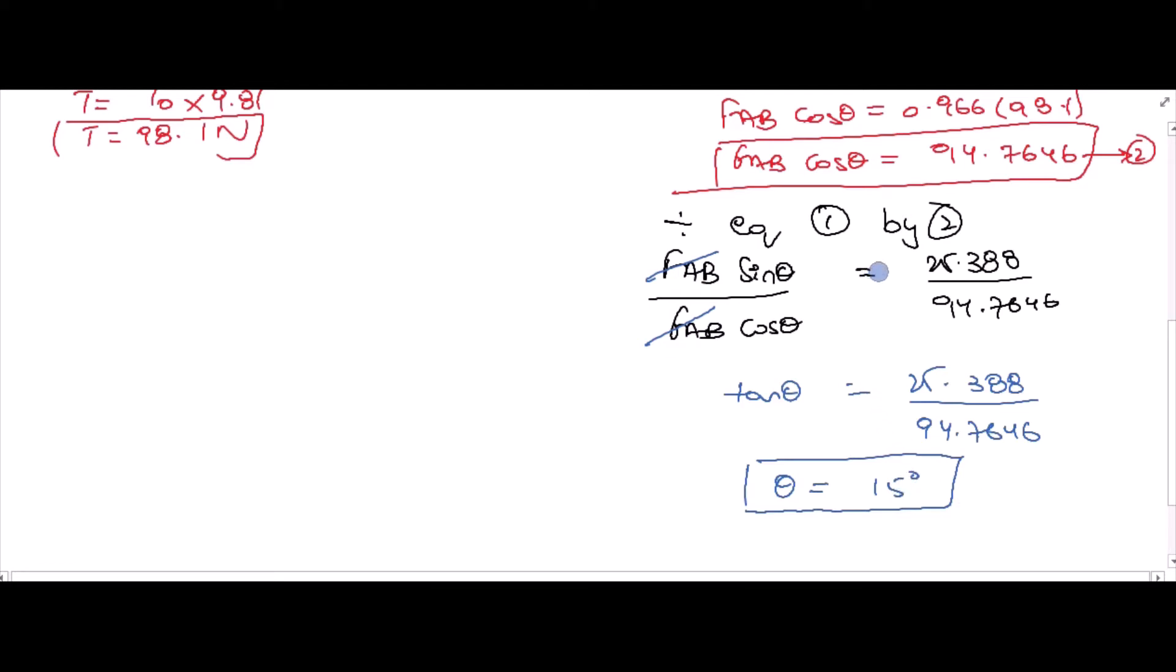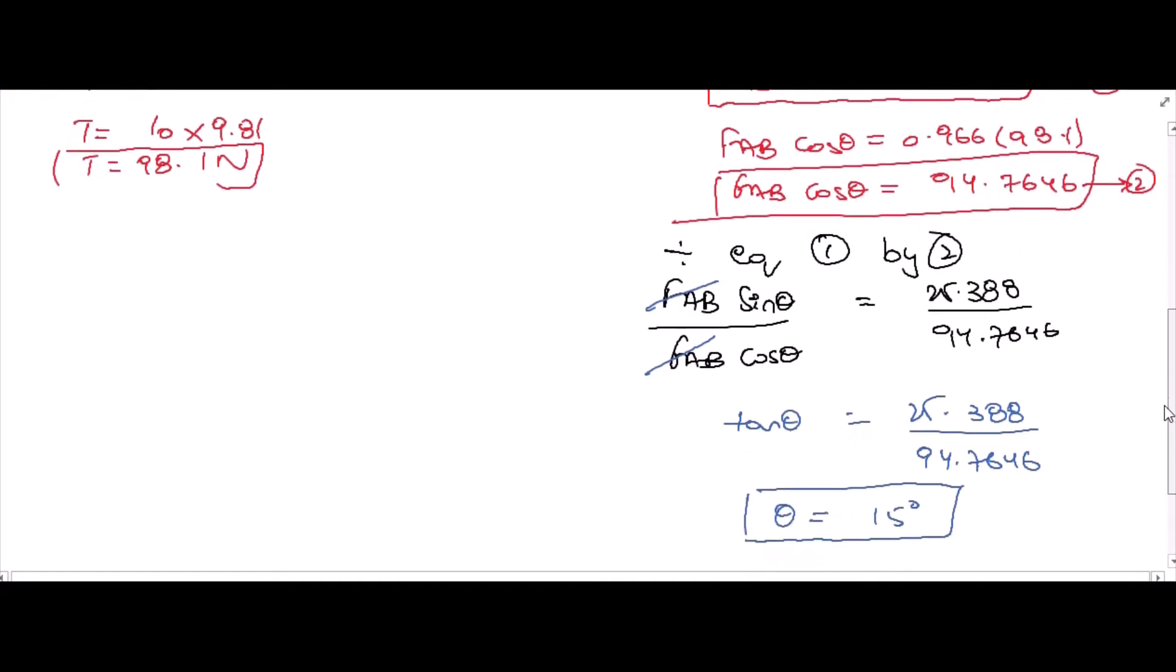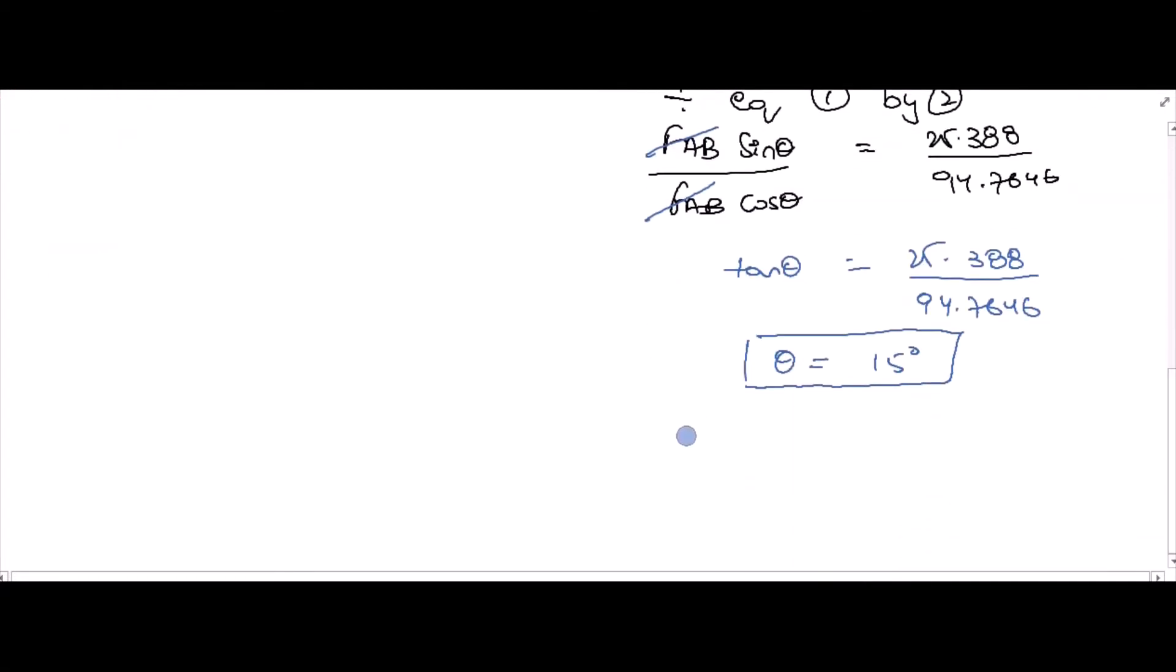Now, to find the value of FAB, you can put the value of theta in any one of these equations. You can put it in either equation 1 or in equation 2. You will get the same answer. I am putting it in equation 1. From equation 1, FAB sin 15 degrees is equal to 25.388. FAB is equal to 98.1 N.